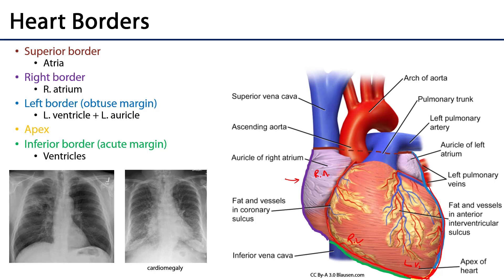The left border of the heart is largely the left ventricle, but there is also part of the left atrium in association there. The superior border of the heart is associated with both the right and left atria.